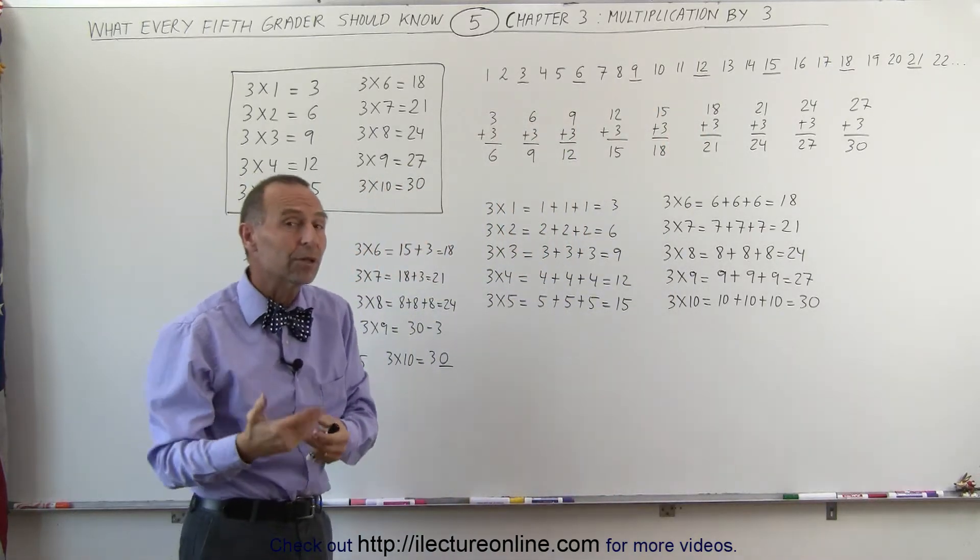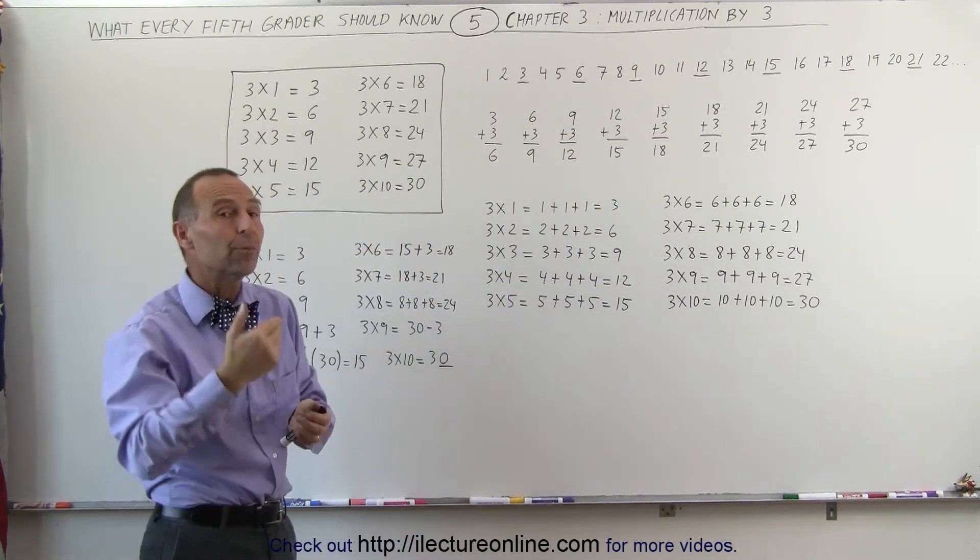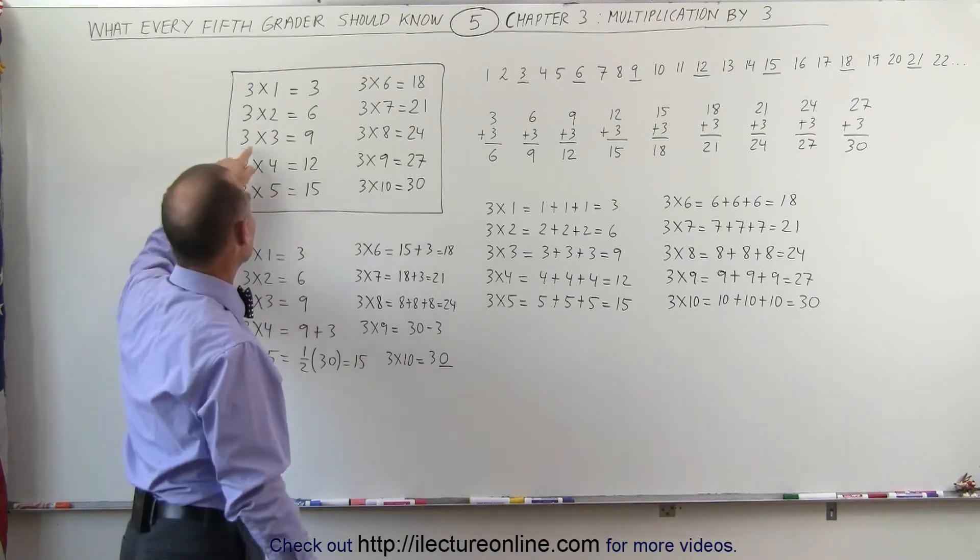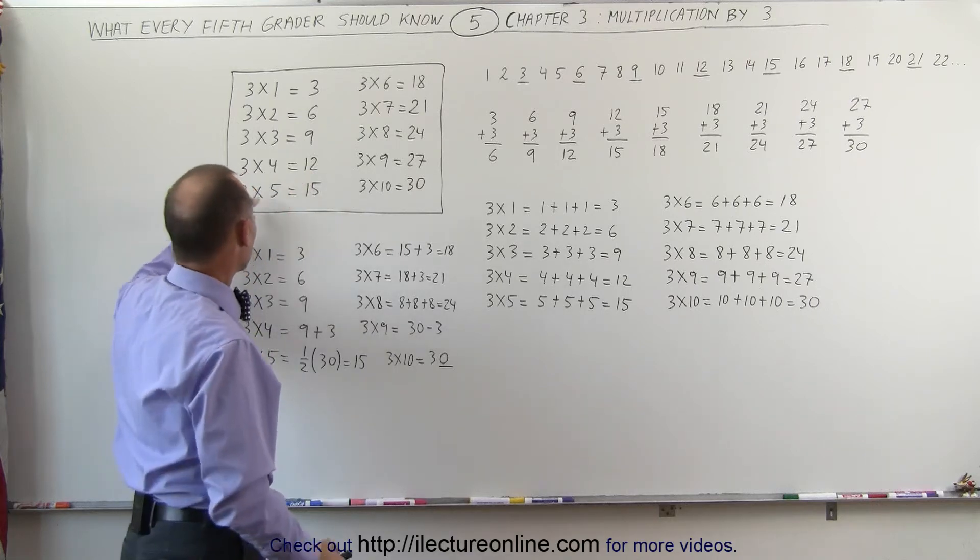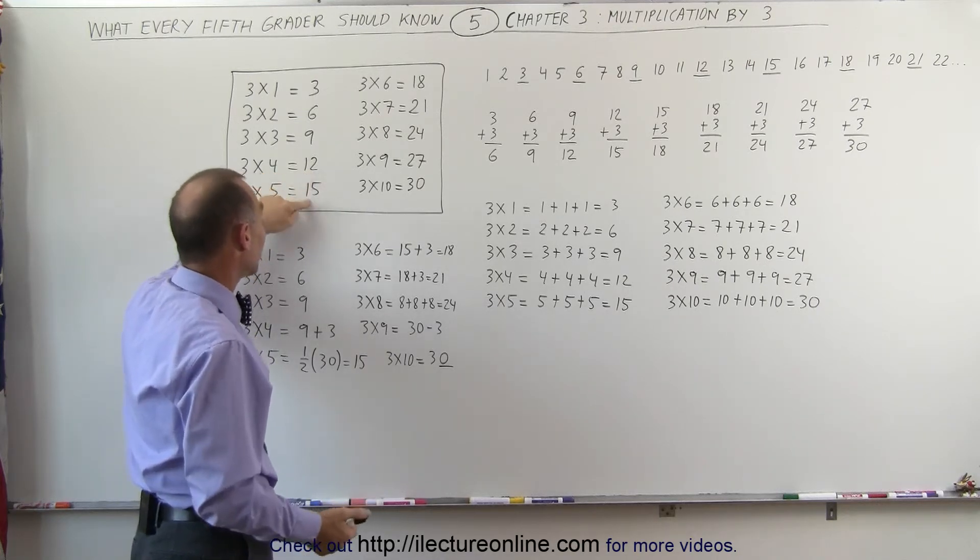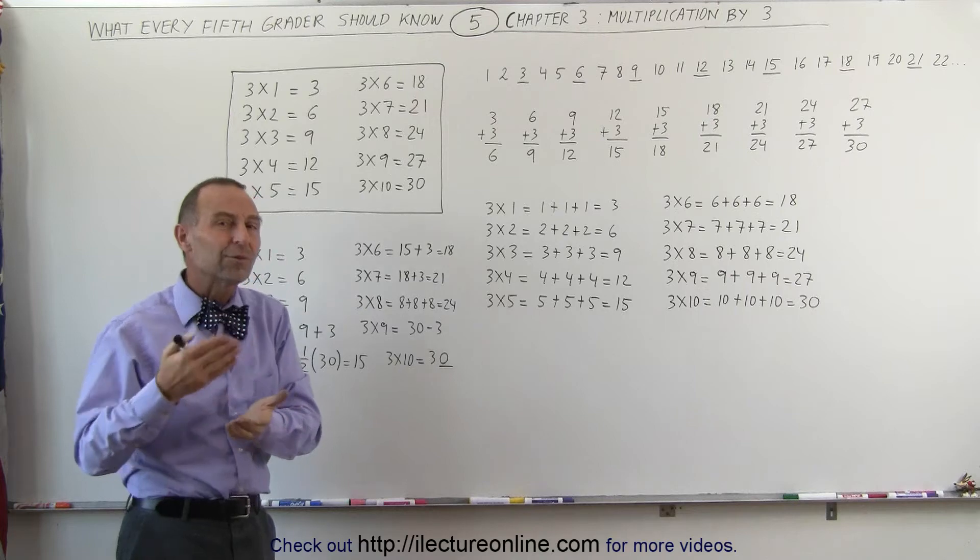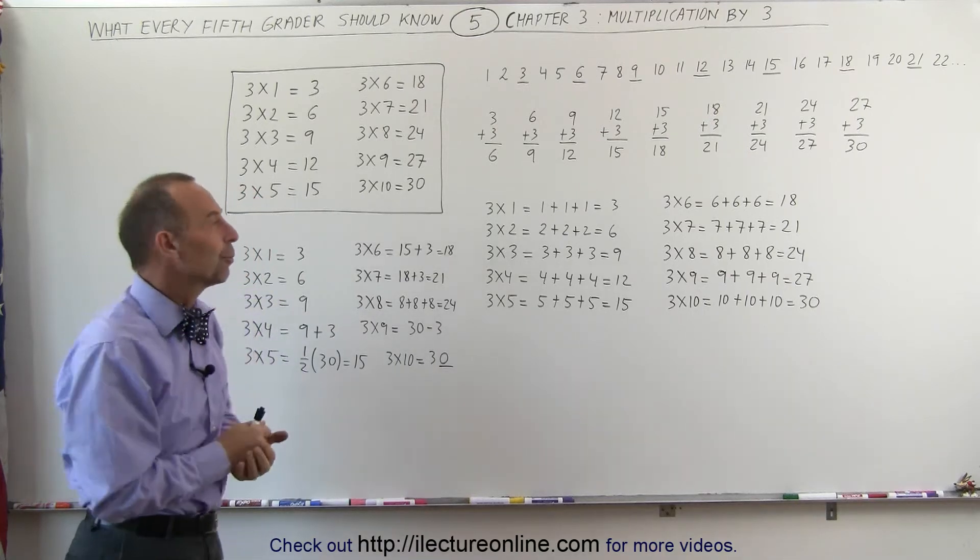Another way of looking at it is when you multiply, it's always adding 3 to the previous answer. So if you have 3 times 3 being 9, then 3 times 4 is 9 plus 3 gives you 12. 3 times 5 is the previous answer, 12 plus 3 gives you 15. It's always 3 more in the next answer compared to the previous answer.